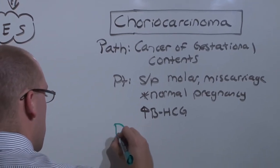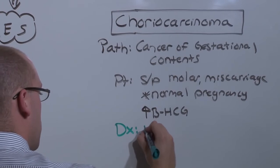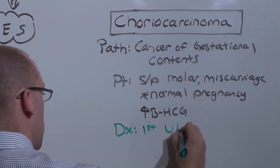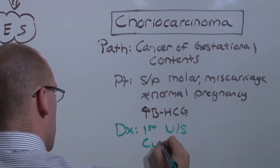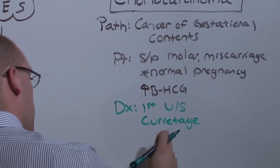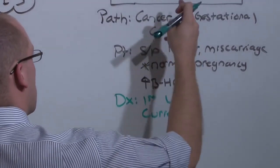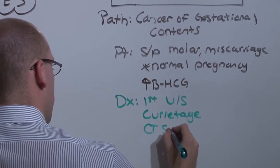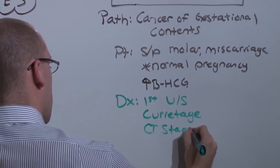To diagnose it, the first thing you are going to do is get the ultrasound. You are going to do the suction curettage, not the D&C. And once you have the biopsy, the tissue, that shows you choriocarcinoma, you are going to stage with a CT scan.